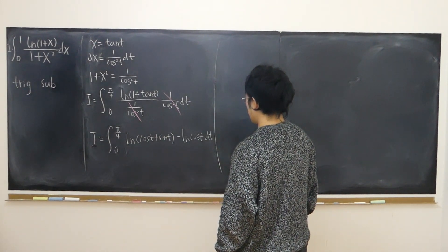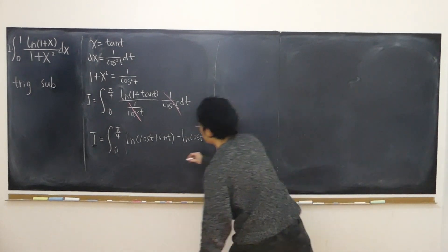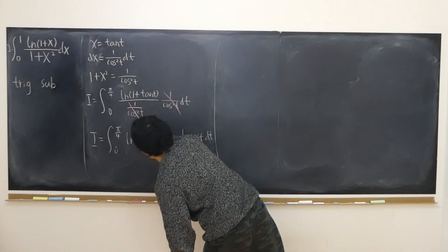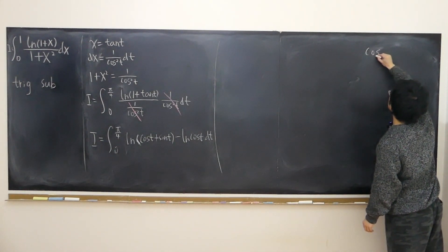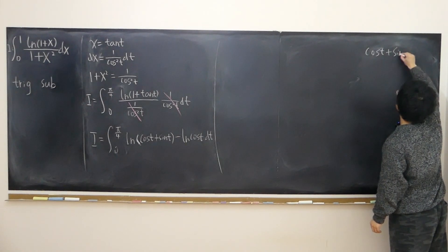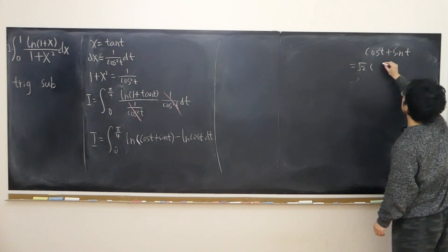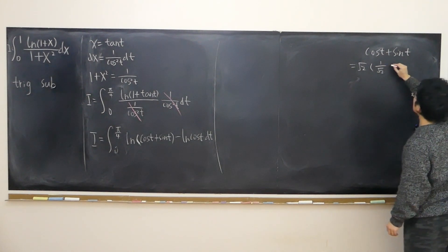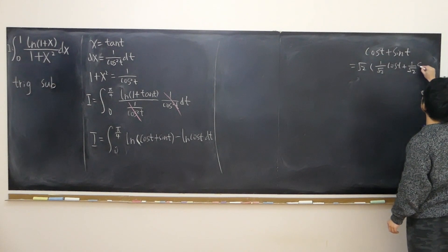And now let's look at cosine plus sine. Cosine plus sine, you can extract the square root of 2. We have 1 over square root of 2 times cosine t plus 1 over square root of 2 times sine t.